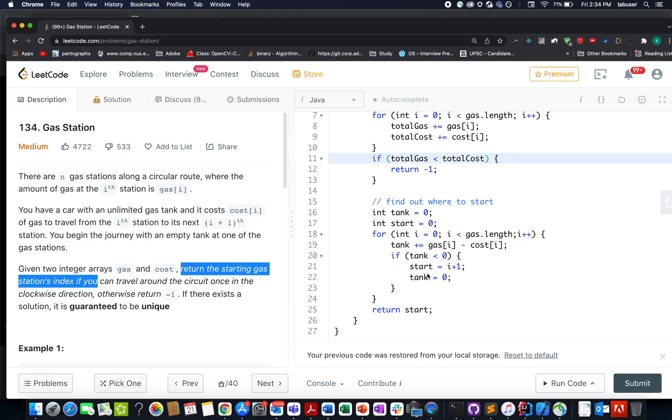Here in this question we are given N gas stations that are placed along a circular route. We are also given a gas array and a cost array. The cost array signifies the total amount of gas it consumes to travel from the i station to i plus one station. What we need to do is check whether it's possible for the car to travel along the circular route and cover all the gas stations.